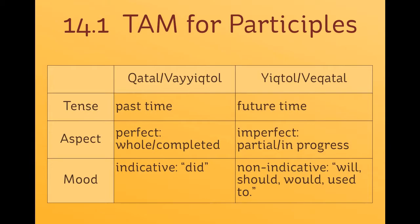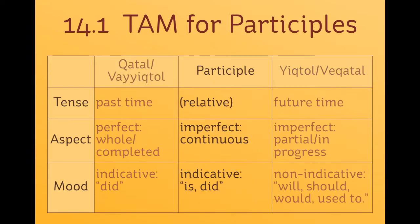Here's the chart you've seen so far. I described this dichotomy in the language between katal/yiqtol and wayyiqtol/yiqtol. Today we can add participles to the mix — specifically, predicate participles. So when a participle is acting predicatively, like a verb, what kind of tense aspect mood information does it encode? I don't believe participles actually encode any tense information, distinct from katal and yiqtol verbs, where the time of the participle action is relative.